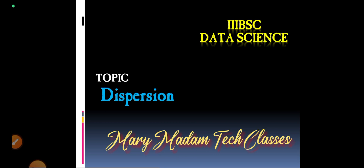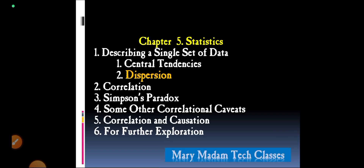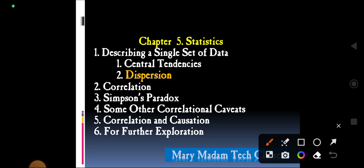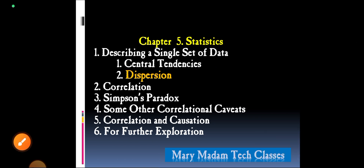Hello students, welcome to my channel Mary Madam Tech Classes. Today we are going to continue from the data science Chapter 5: Statistics, and the topic is dispersion. In the public examination, if they ask you for ten marks, write these two topics: central tendencies and dispersion. If they ask for five marks, write about central tendencies or dispersion.